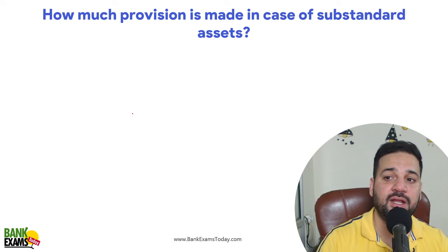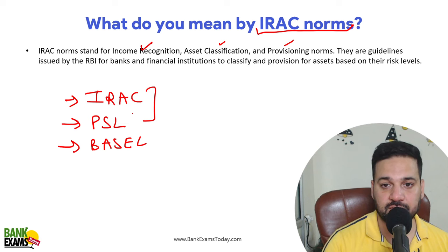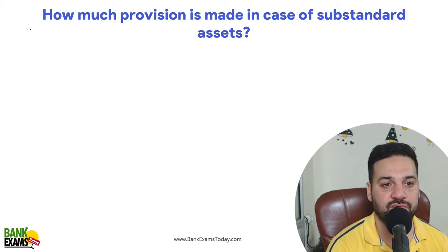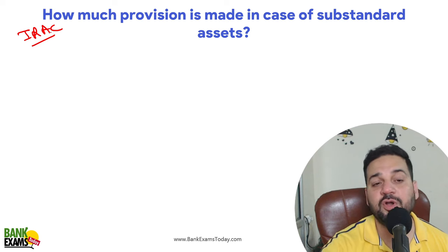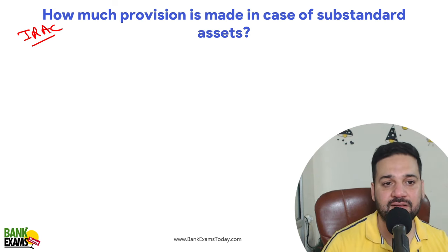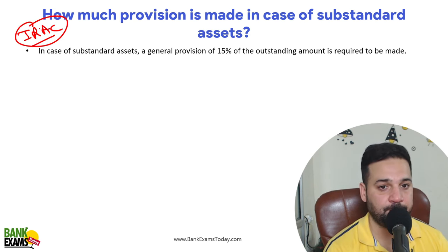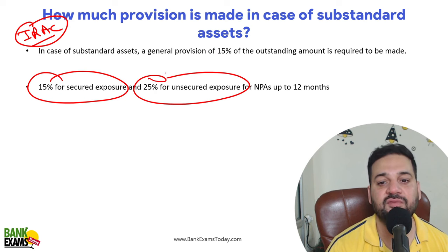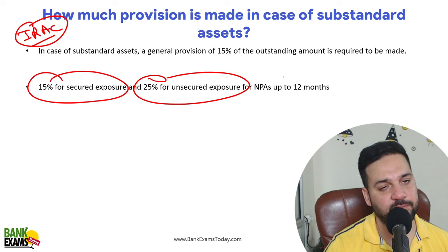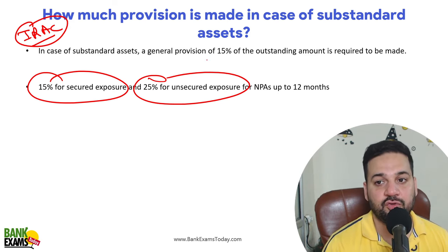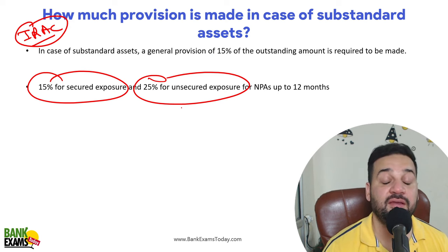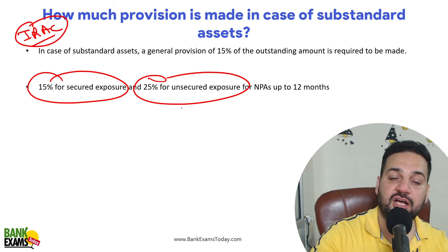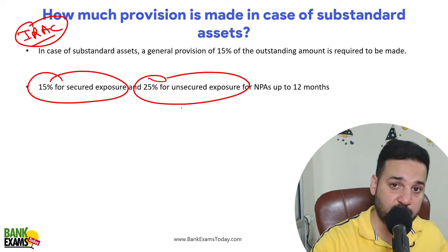A follow-up question from IRAC norms: how much provision is to be made in case of a substandard asset? In case of a substandard asset, a general provision of 15% is required for secured exposure and 25% for unsecured exposure, for NPAs up to 12 months. After that, it is classified as a bad debt. This is directly from IRAC norms. If a question is asked from priority sector lending, further cross-questions will also be asked from that topic.